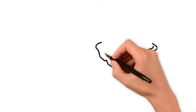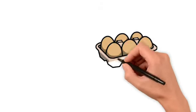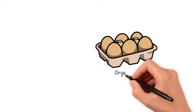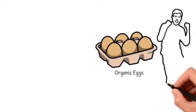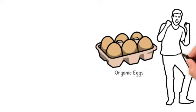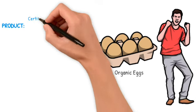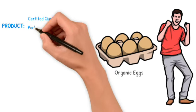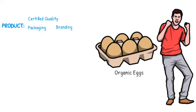Let's take an example of a business running on eggs. Here we will try to understand how the marketing mix helps a business take decisions, using the four Ps, so that we can get maximum revenue and customer satisfaction. First thing is product: certified quality, packaging, branding — easy.